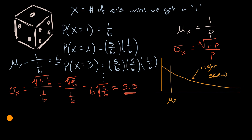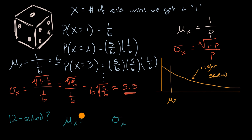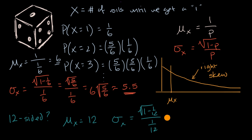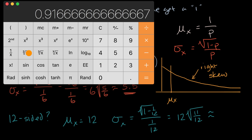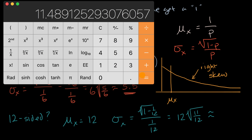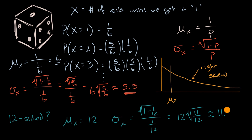One last question: instead of a six-sided die, what if we used a 12-sided die? The mean would be one over one-twelfth, which equals 12 — so on average it takes 12 rolls to get that first one. The standard deviation would be the square root of (one minus one-twelfth) over one-twelfth, which is 12 times the square root of eleven-twelfths. That's approximately 11.5.